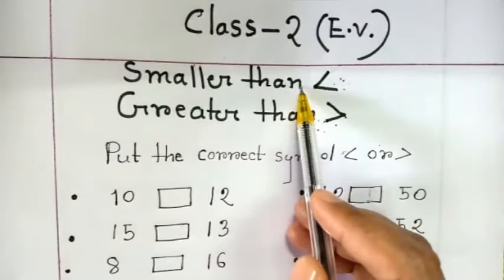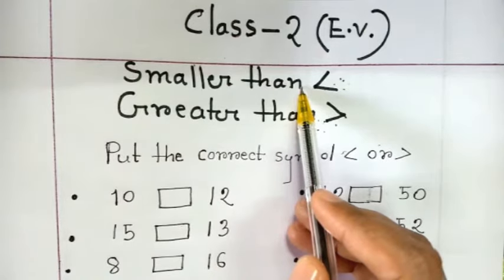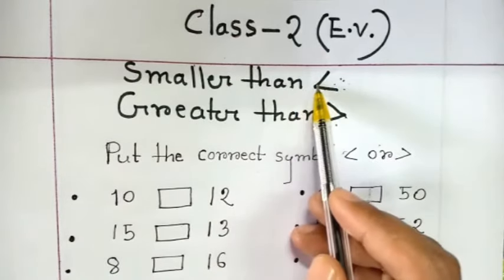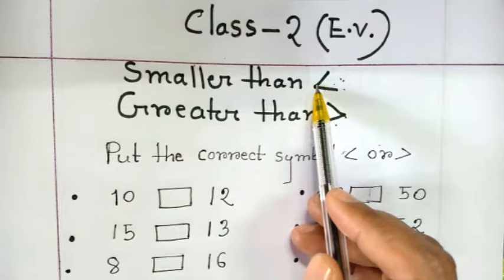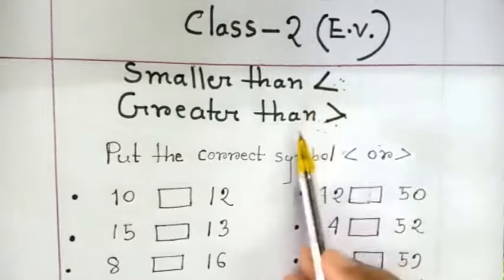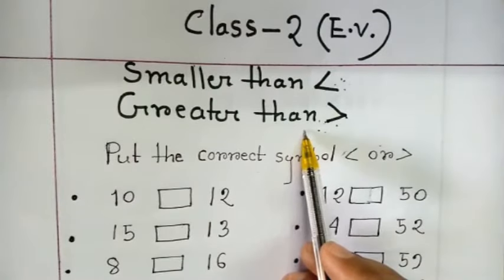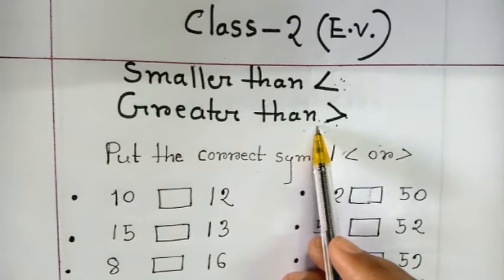Smaller than sign, this sign always towards the smaller number, a sign to all the smaller number is the smaller number, which is the smaller number. And this sign, this opening mouth of this sign, always faces the bigger number.